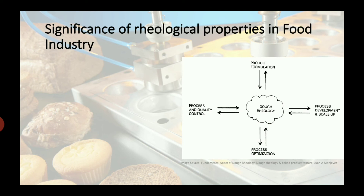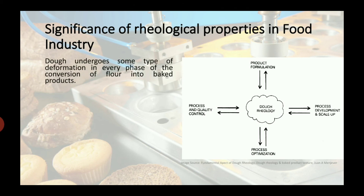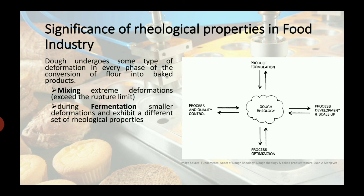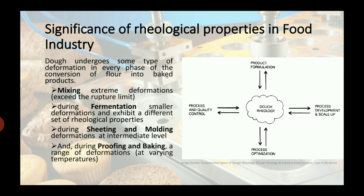The significance of rheological properties in the food industry: dough undergoes some type of deformation in every phase of the conversion of flour into baked products. During mixing, extreme deformation takes place which can exceed the rupture limit. During fermentation, a smaller deformation takes place which exhibits different sets of rheological properties. During sheeting and molding, deformation at an intermediate level occurs. Tests such as the Farinograph, Mixograph, and Amylograph measure the mechanical properties of dough that are essential in maintaining their properties during processing and the desired quality attributes in the final product.